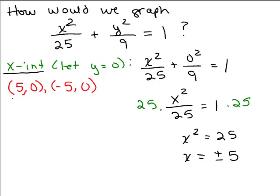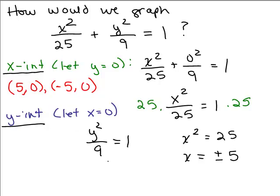Now pause the video and try to figure out the y-intercepts — let x equal 0. If you let x equal 0, the first term disappears and you get y squared over 9 equals 1. Multiply both sides by 9: y squared equals 9, so y equals plus or minus 3. The y-intercepts are (0, 3) and (0, -3).